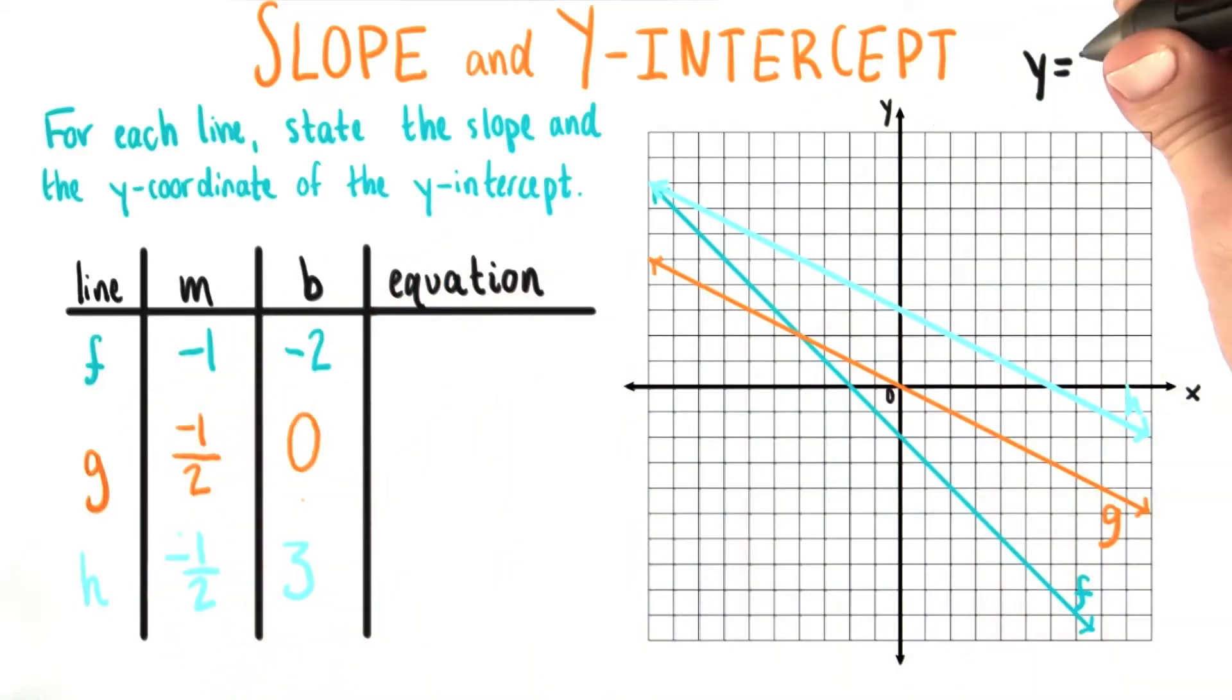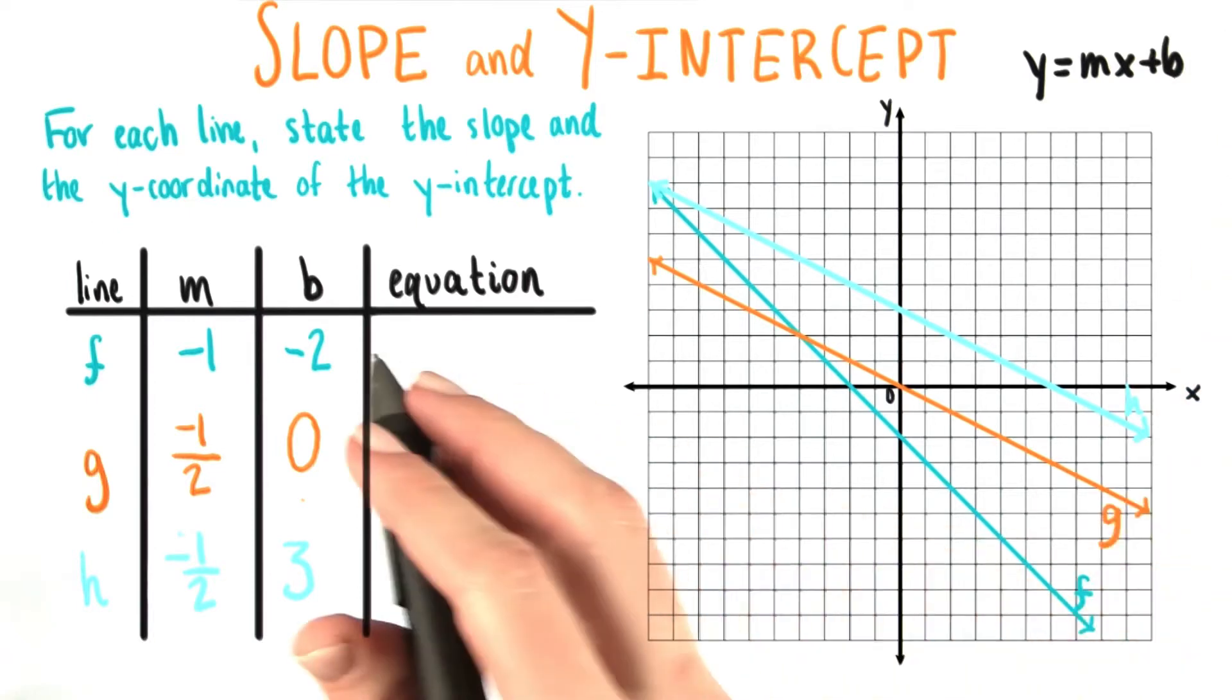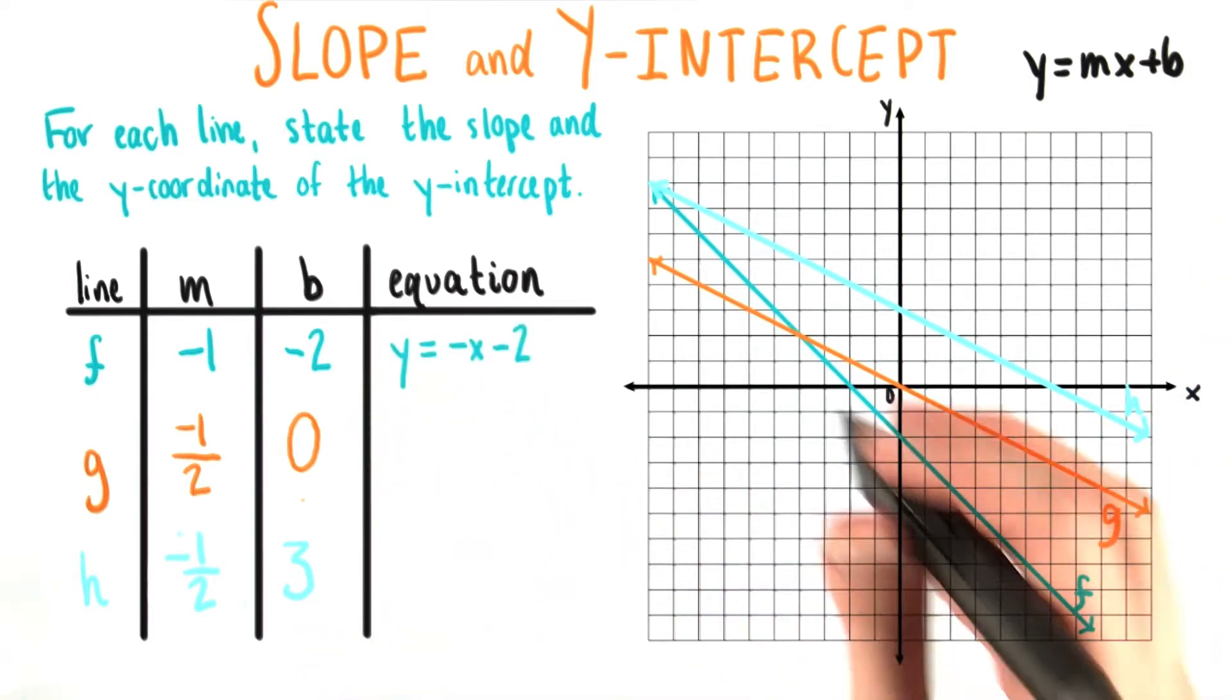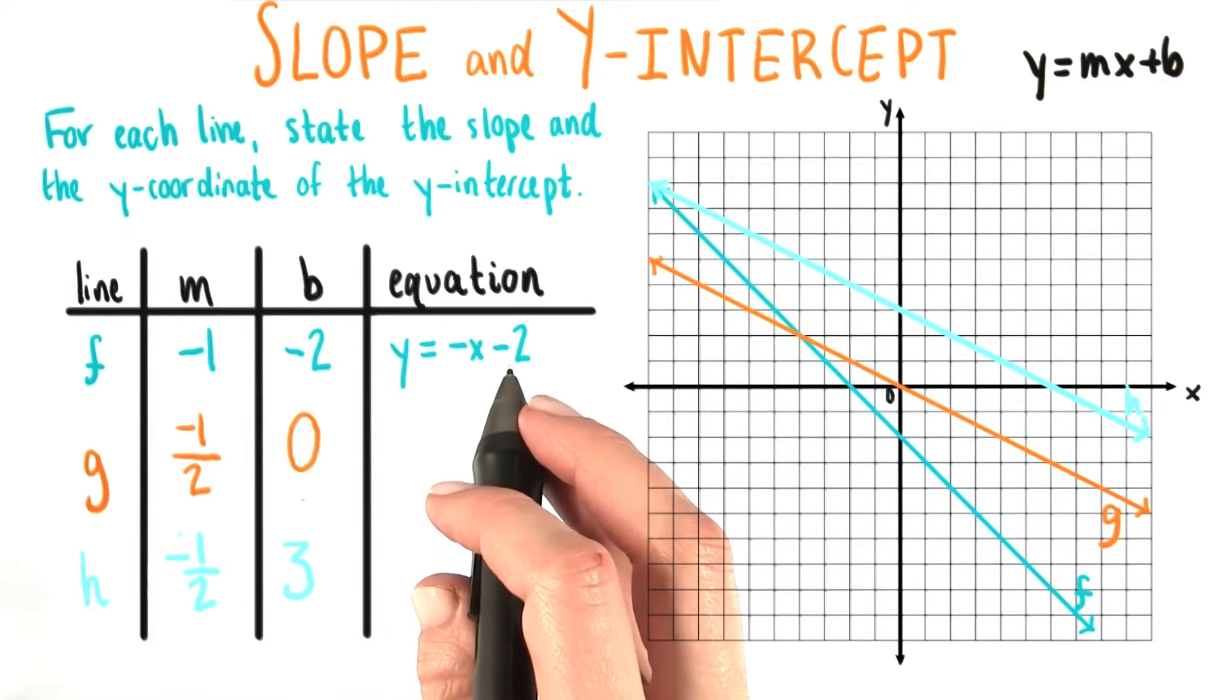Since we have m and b, we can just plug these in to slope intercept form to find the equation for each of these lines. Line f has the equation y equals negative x minus 2.